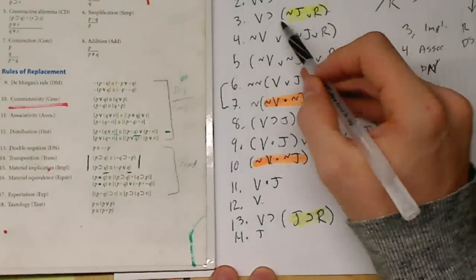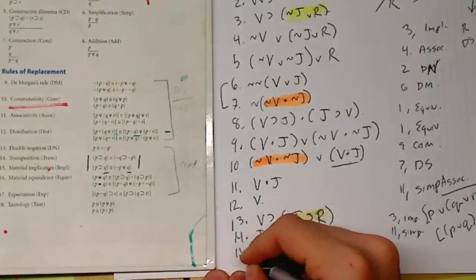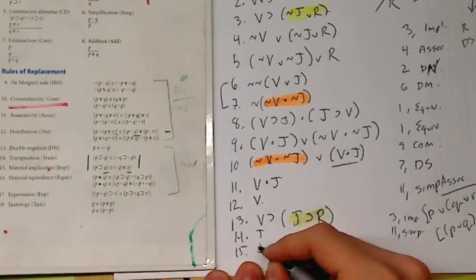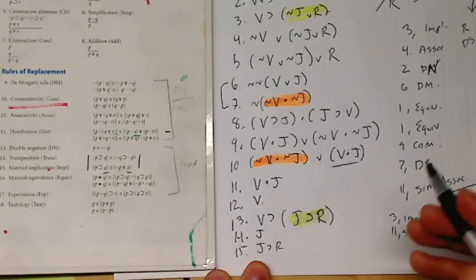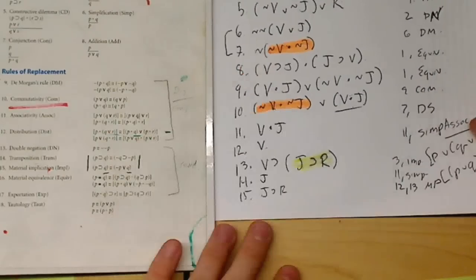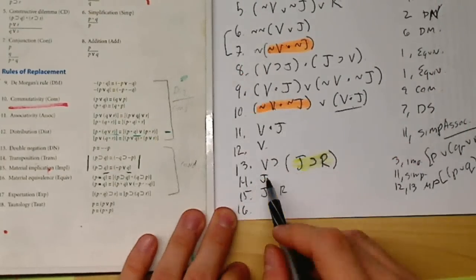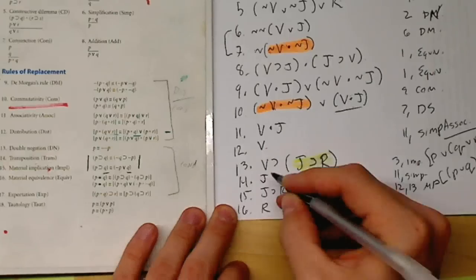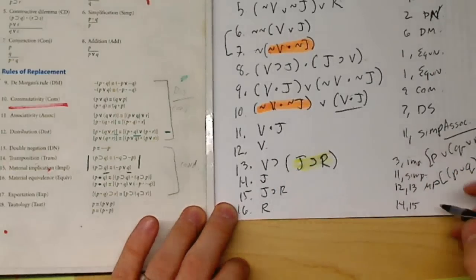So now that I have V→(J→R), line 15 means I'm going to get J→R — that's line 12 and 13, modus ponens. And I also have J from V∧J simplification — line 14 from line 11. So line 16, I have J, which means I must have R — that's line 14 and 15, modus ponens. And I finally got to my R.